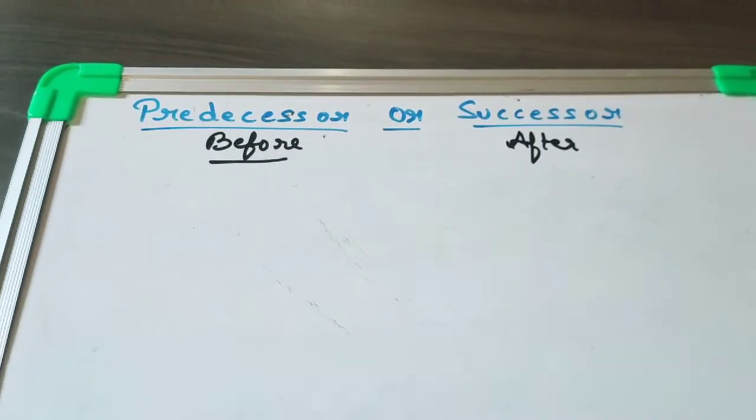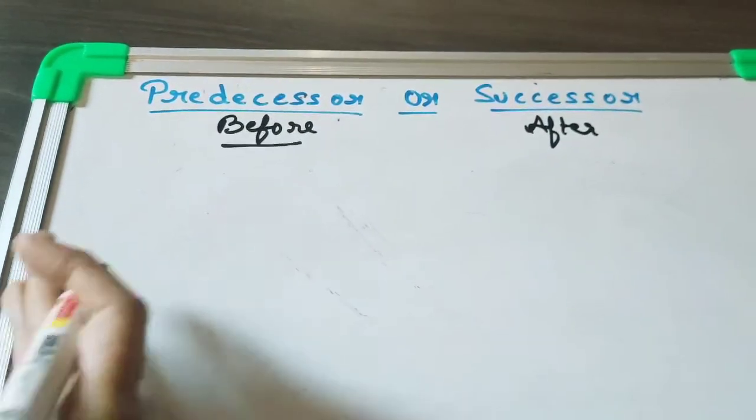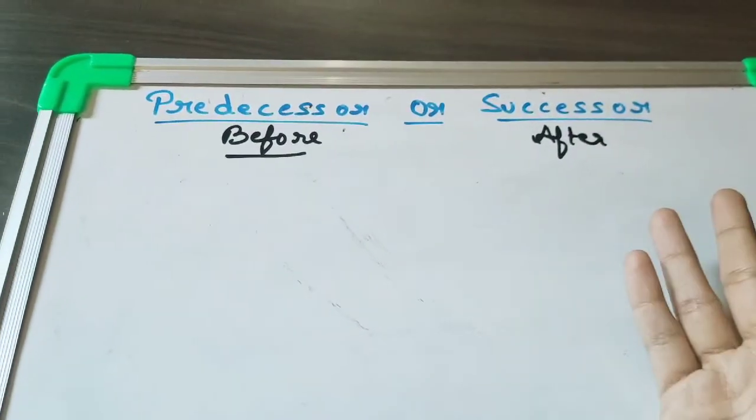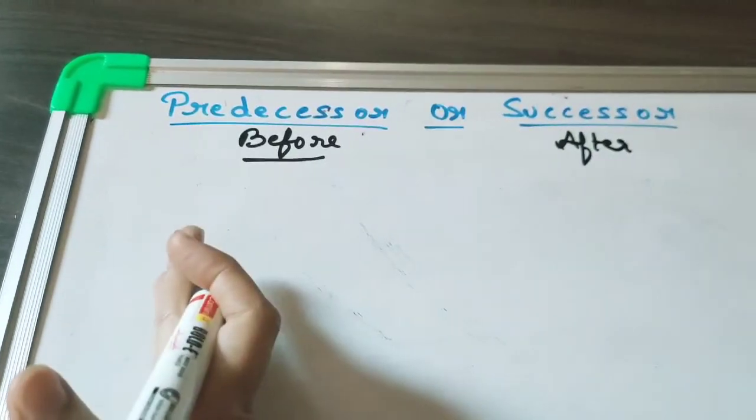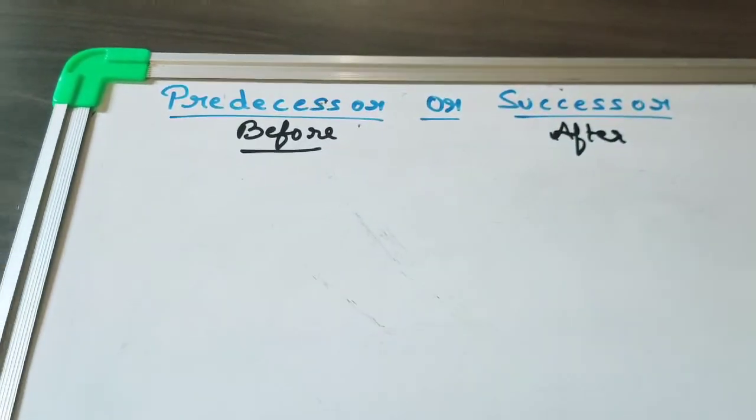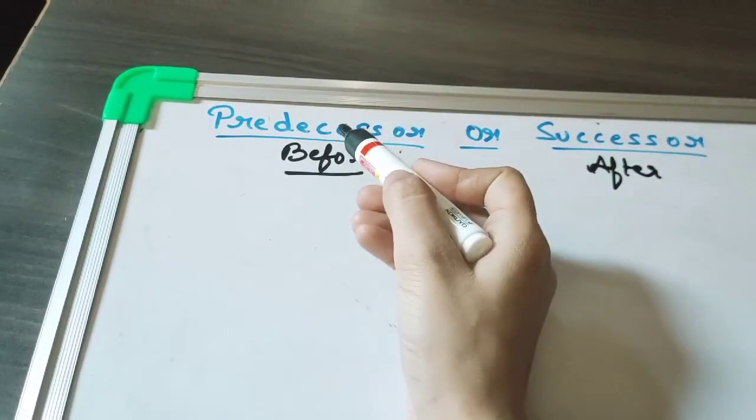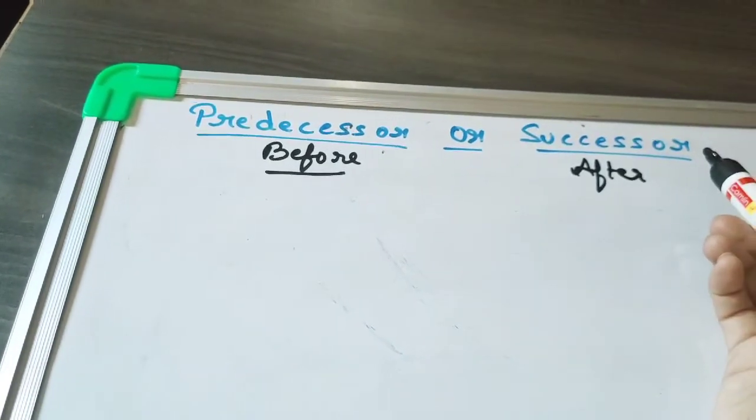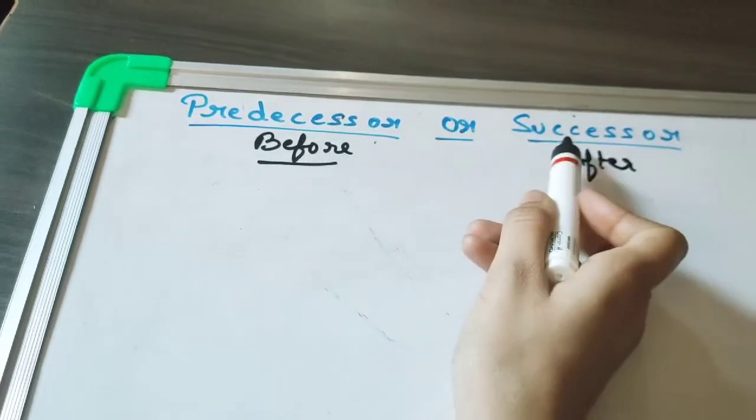Before means... after means... So you have already studied what comes before this number, what comes after this number. So predecessor is the same thing and successor is also the same thing. Predecessor means before, successor means after.